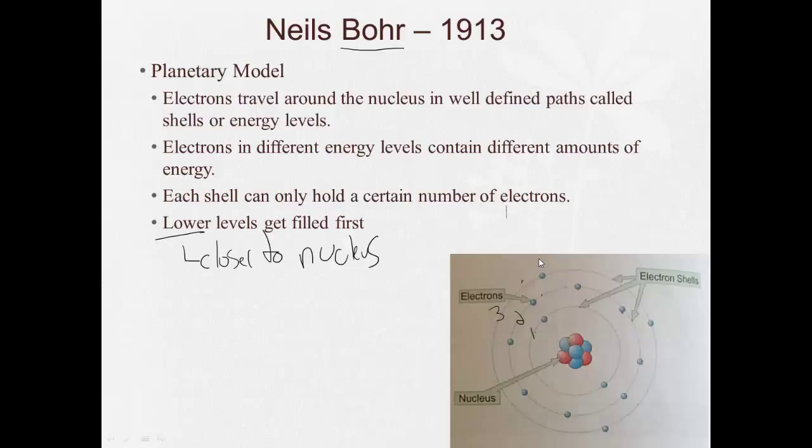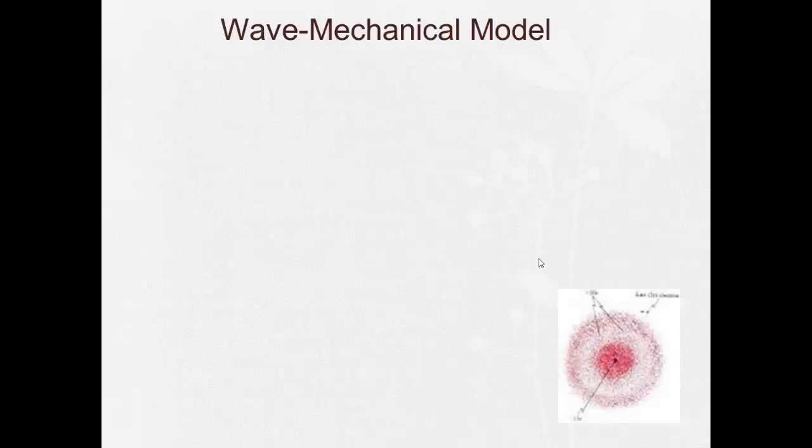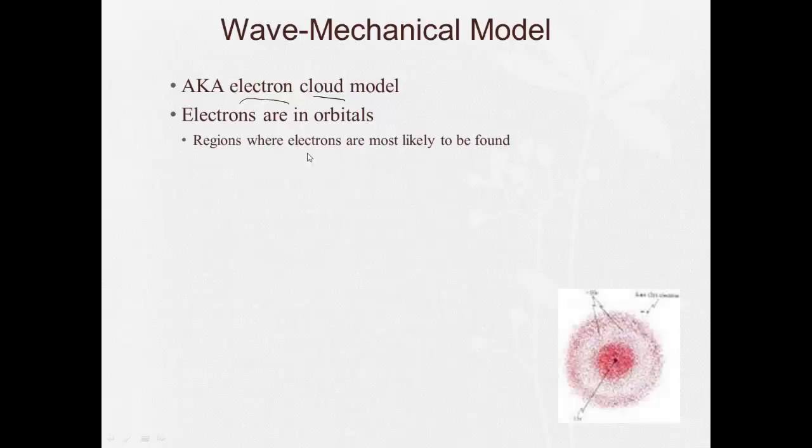However, there is a newer, more modern one, which is pretty widely accepted. And this one says electrons are in orbitals, and it defines an orbital as a region where electrons are most likely to be found. So instead of only going, right, in that distinct path, the electron could really be anywhere in this region. And we can see them here. So here's a region where the electron's more likely to be. Here's a region where the electron's more likely to be, less likely to be in the middle there.